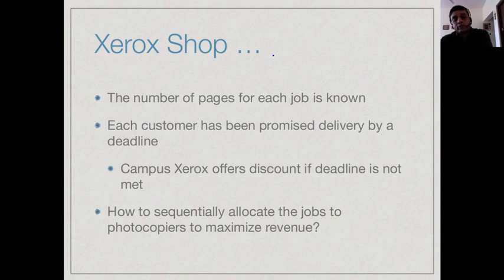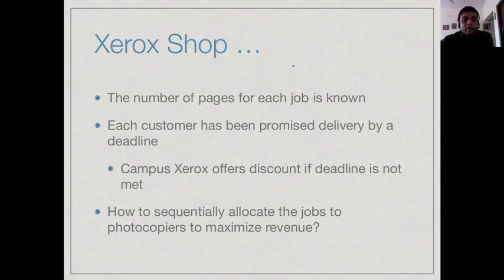Suppose these students have submitted their jobs and Campus Xerox is competing against rivals, so it's offering a special deal. It will give each customer a promised delivery time, and if it doesn't meet the schedule — like a pizza shop — it will give a discount. So they promise a report within six hours, and if you don't get it within six hours, you pay less. Now in this time frame there are of course some bigger jobs and some smaller jobs, so some photocopying jobs will be faster to finish and some will take longer.